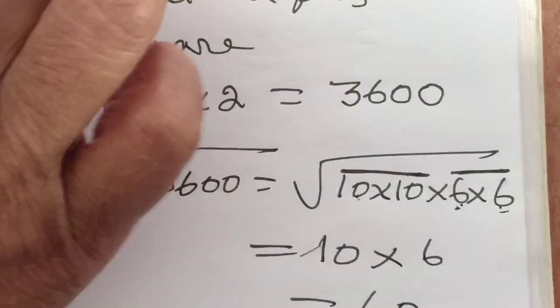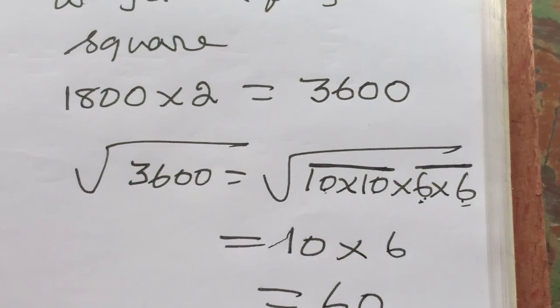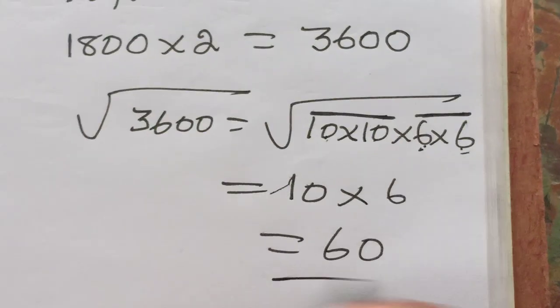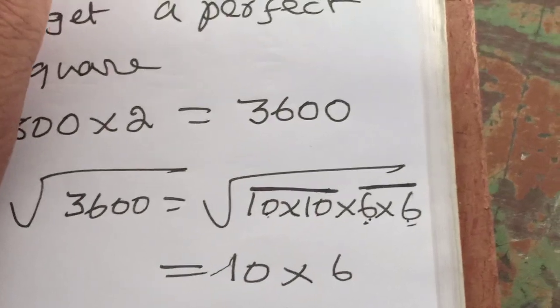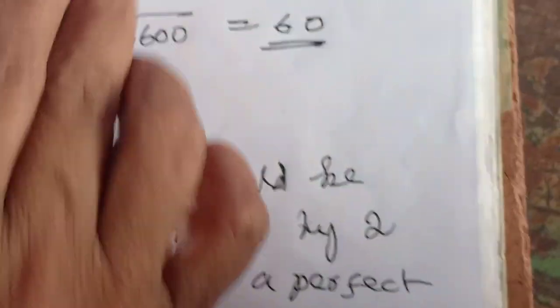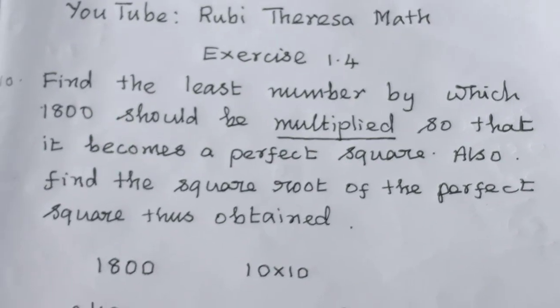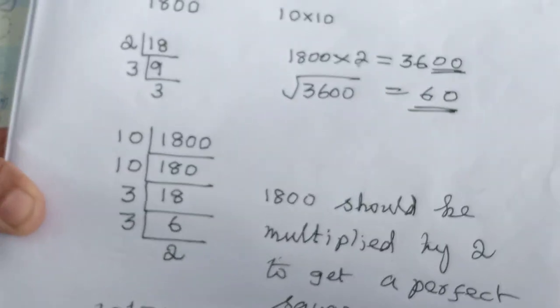Those who are unable to write it directly you can go for this method. Otherwise those who know you can write it. Only they have asked for multiplied. They didn't ask for division. So only multiplication I did it. Do you follow everyone? Thank you.